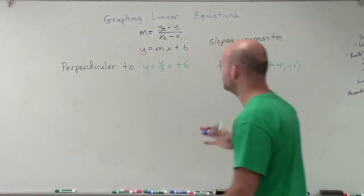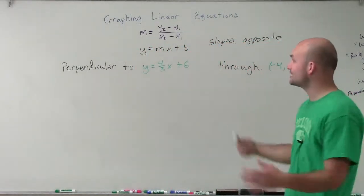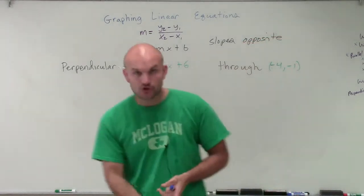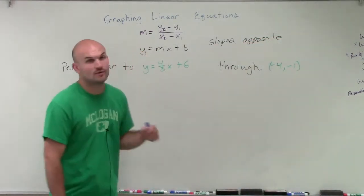Welcome. So what I'm going to do is show you how to write a line that's going to be perpendicular to y equals 4 thirds x plus 6, that is going to go through the point negative 4, negative 1.